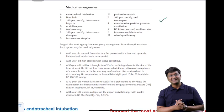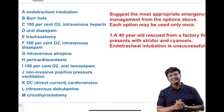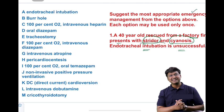The first important clinical scenario: a 40-year-old rescued from a factory fire presents with stridor and endotracheal intubation is unsuccessful. You need to suggest the emergency management. Among the options given, the first option you might think about is tracheostomy.